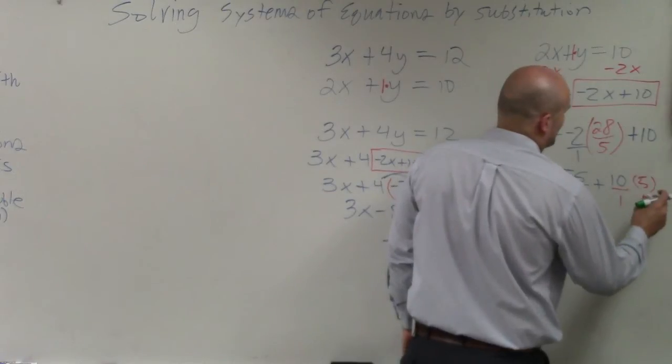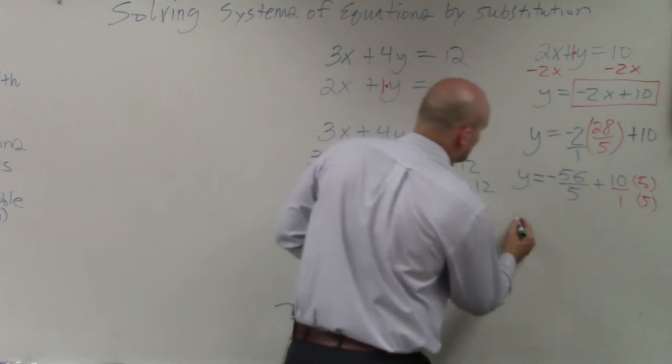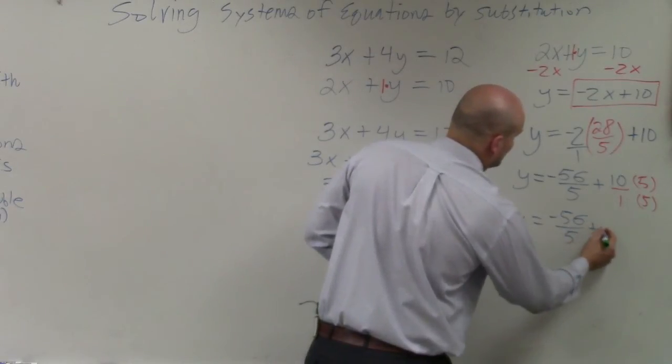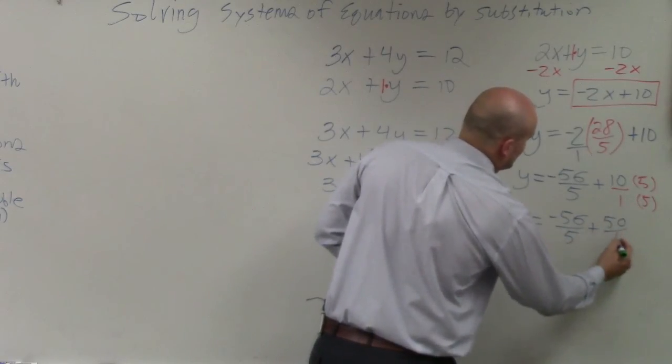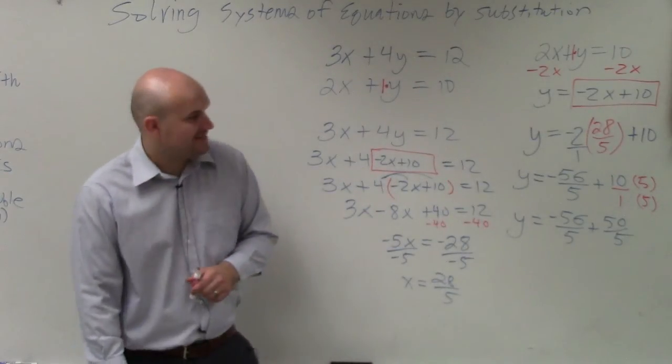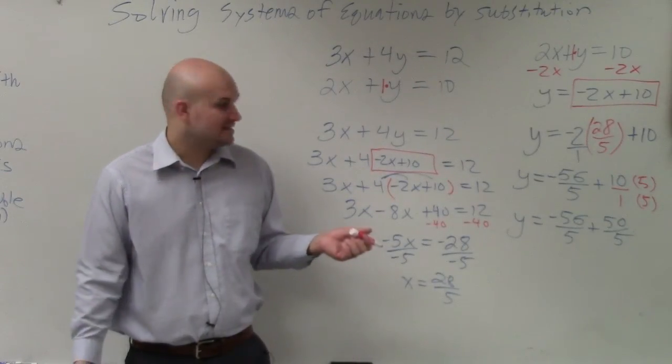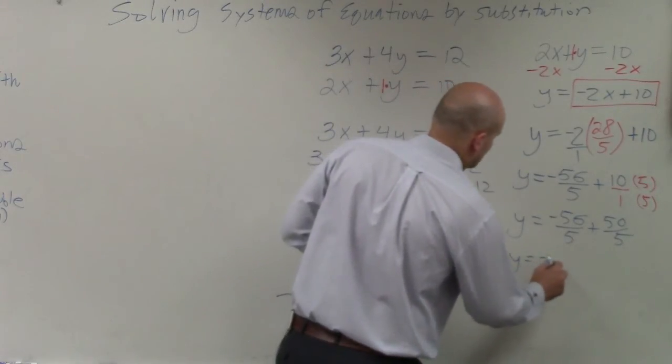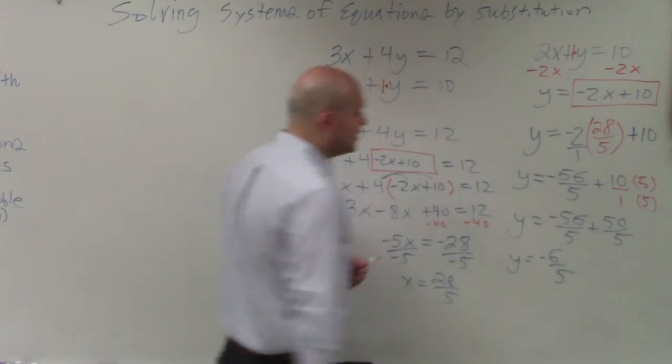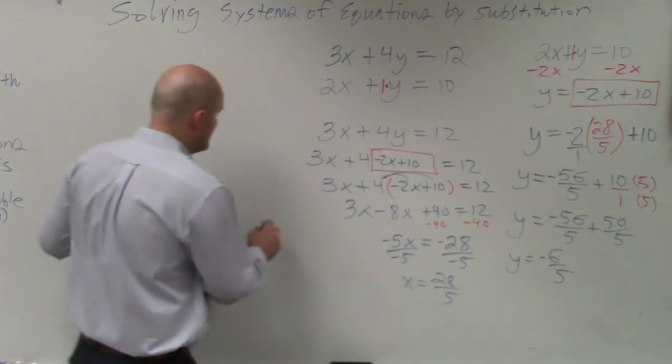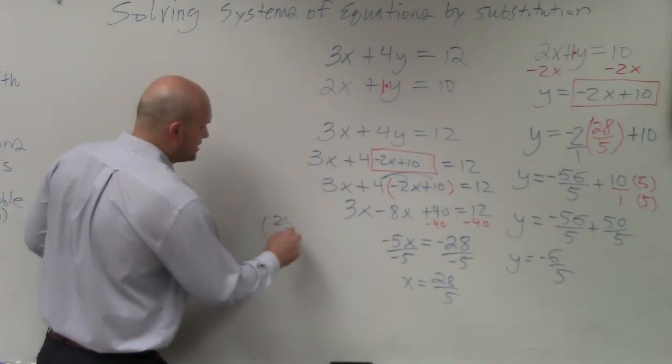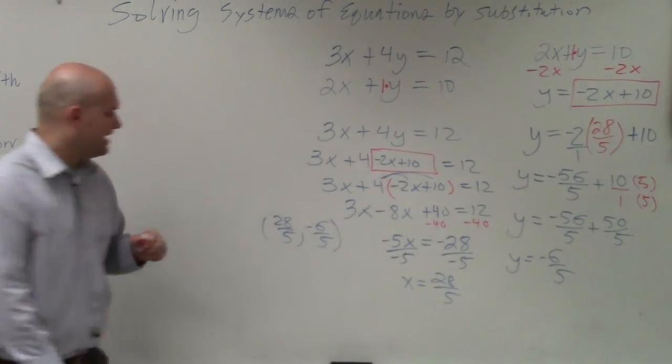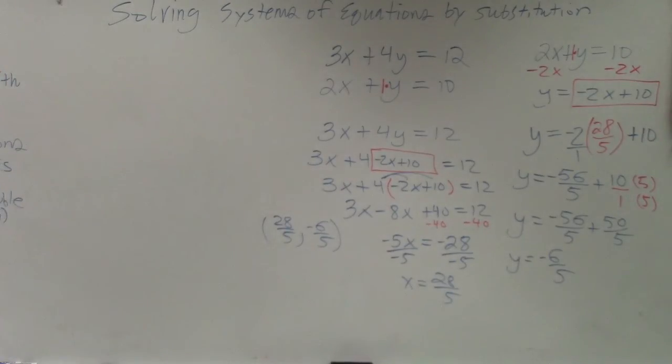So really, y equals negative 56 over 5 plus 50 over 5. Now that I have the same denominator, negative 56 plus 50 is going to be negative 6. So that's my x value. That's my y value. So the point of intersection is the coordinate point 28 fifths comma negative 6 fifths.